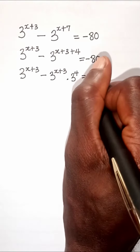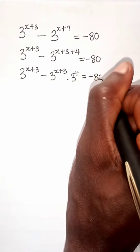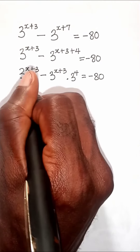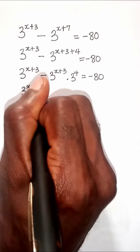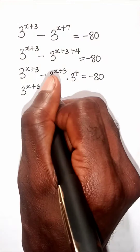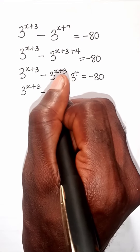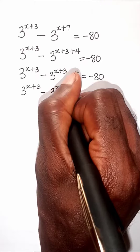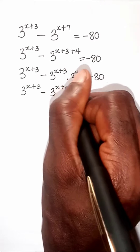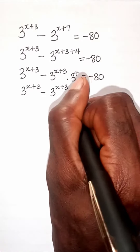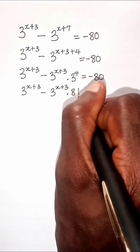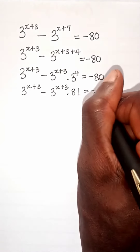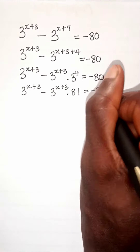And that equals negative 80. That is done in accordance with the law of exponents. So 3 raised to the power of x plus 3, minus 3 raised to the power of x plus 3 times 81, equals negative 80.